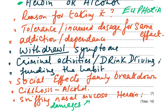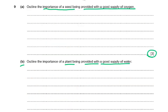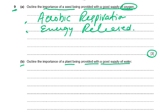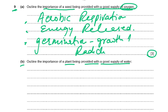Question 9: the importance of a seed being provided with a good supply of oxygen. Oxygen is needed for aerobic respiration — if you just say 'respiration' that won't get you marks, it must be aerobic respiration. Aerobic respiration releases energy. That energy is needed for germination — specifically for the growth of the radicle and the plumule. It's a narrow mark scheme: three marks, three points — aerobic respiration, energy released, growth of radicle and plumule.